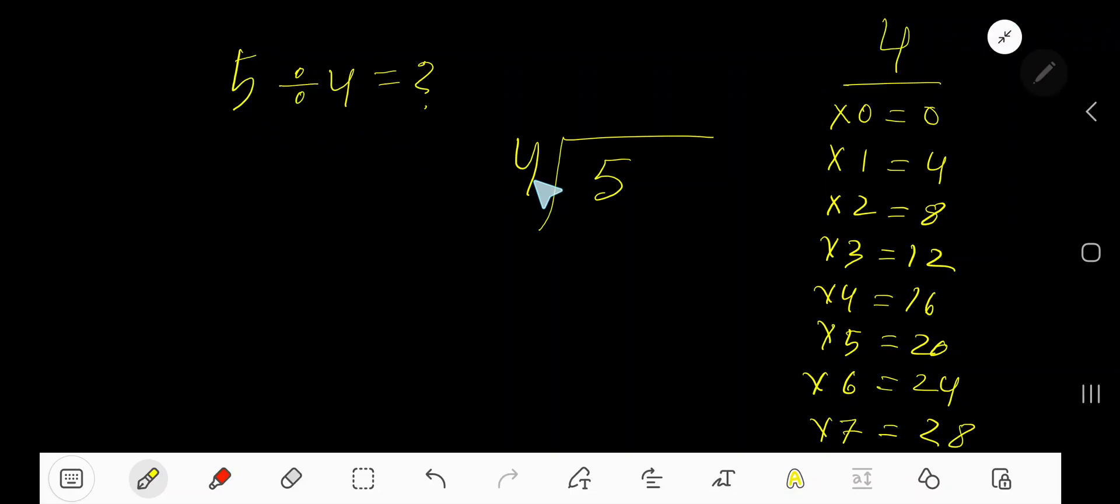5 divided by 4. Here 4 is a divisor, so we need the multiplication table of 4. 4 times 0 is 0, 4 times 1 is 4, 4 times 2 is 8, 4 times 3 is 12, 4 times 4 is 16.